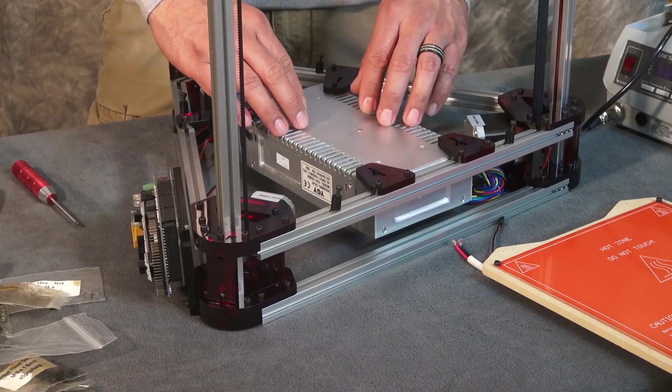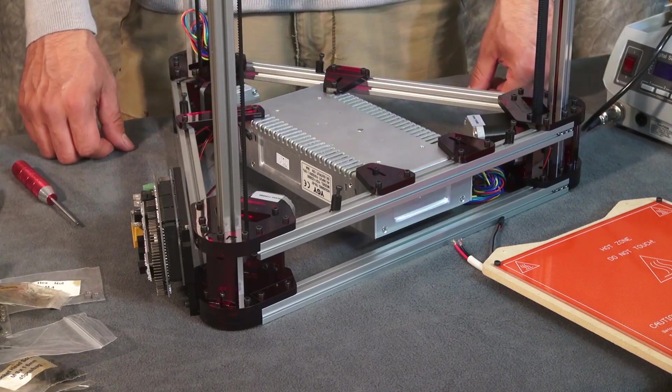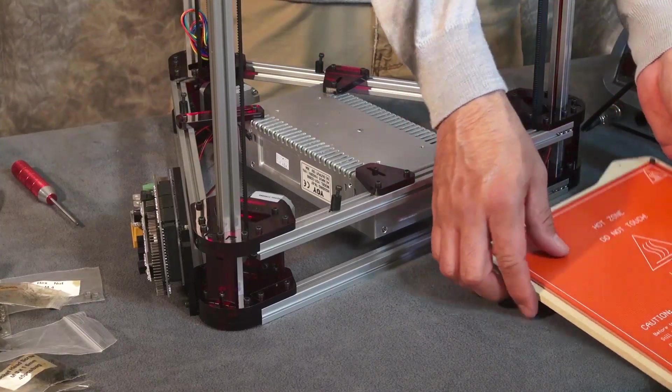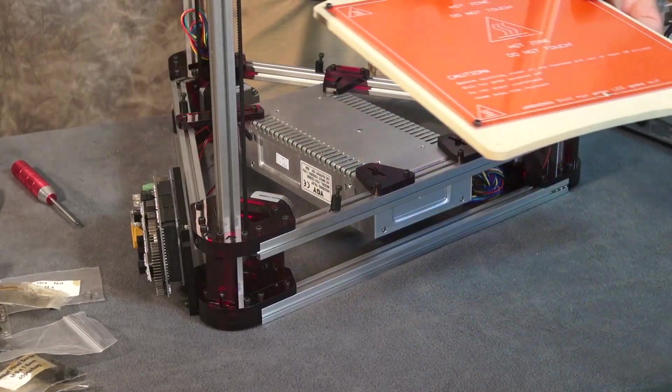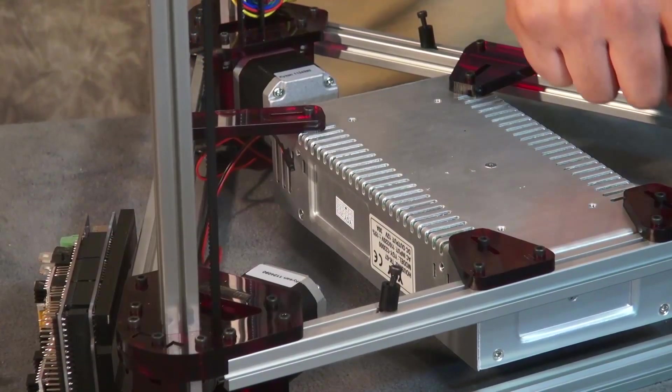This is where that will come into play. So go ahead and get your heat bed. You want to line up your mounting screws in a position that lines up with the holes that are on your board.